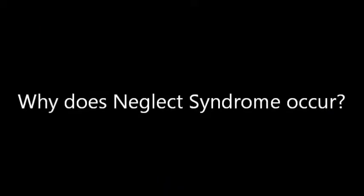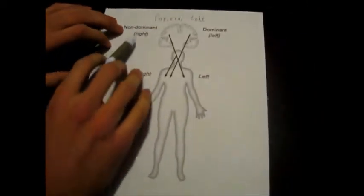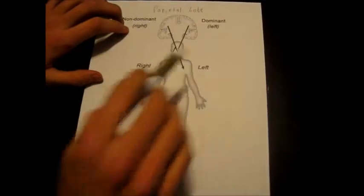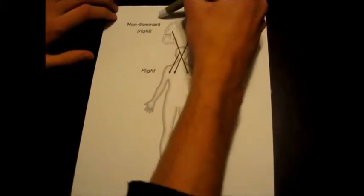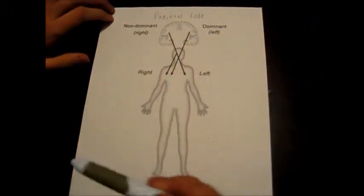It most often affects the left side of the body following damage to the right parietal lobe. In the parietal lobe, specifically the parietal association cortex, the PAC, we have a non-dominant and a dominant cortex. The non-dominant cortex, often on the right, is the only side that mediates attention to the left side of the body. Thus, if this non-dominant cortex becomes damaged, the left side of the body can become neglected by several sensory modalities.